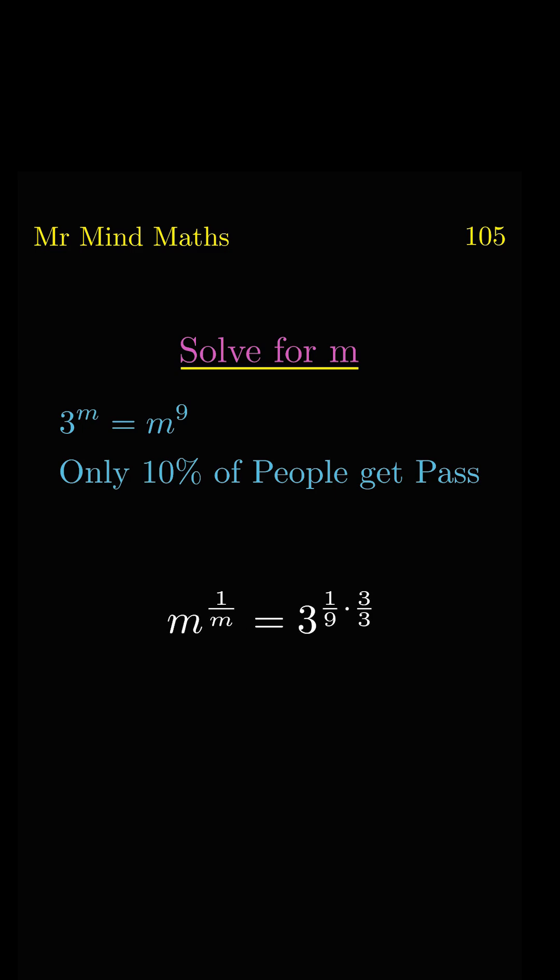The numerator will multiply with the numerator, and it will become the power of 3. Here we know that 3 power 3 is equal to 27. So now by comparing, we can write m equal to 27.